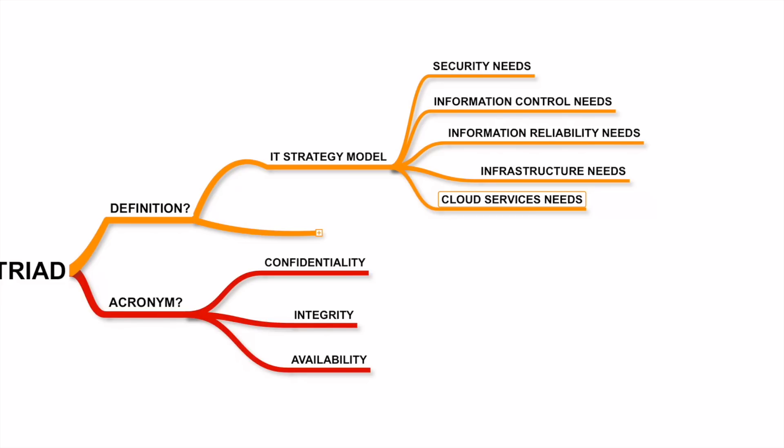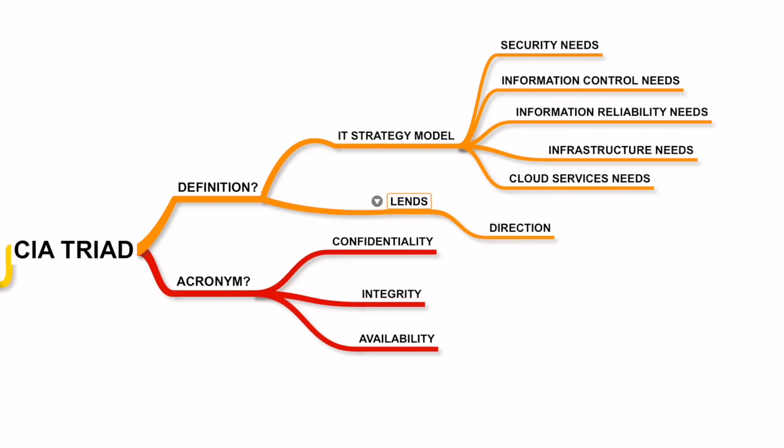As an organization interested in capturing, processing, and consuming information, and keeping in mind the key business objectives, the areas mentioned by the CIA Triad have to be reviewed and applied in the right direction. In today's world, these relate to the very strategy and survival of the business, so we may also call this a business survival strategy model.